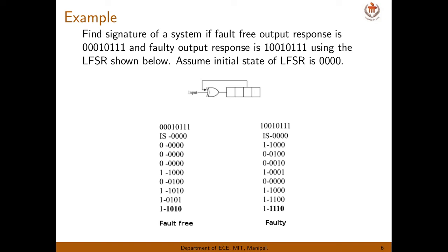If there is a fault in the circuit and we get the faulty response, starting again from initial state 0,0,0,0, the final residue will be 1,1,1,0. This does not match the expected signature of 1,0,1,0, so we can tell there is a fault in the circuit.